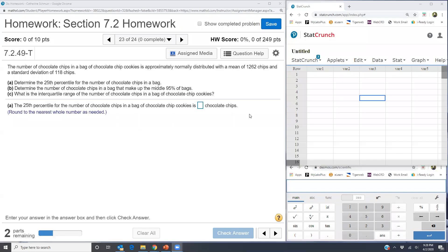This is homework section 7.2 problem 23. It says that the number of chocolate chips in a bag of chocolate chip cookies is approximately normally distributed with a mean of 1262 chips and a standard deviation of 118 chips.